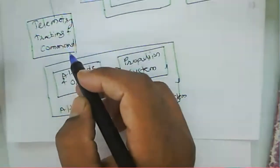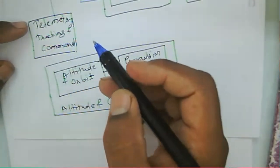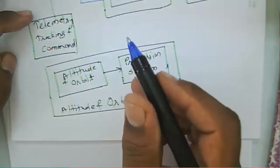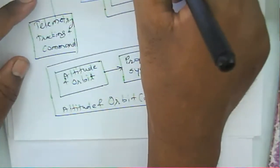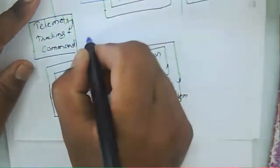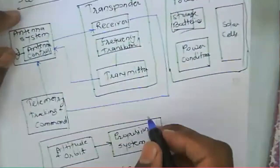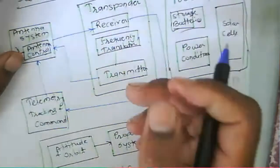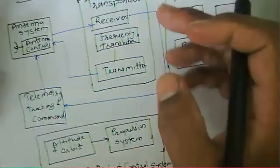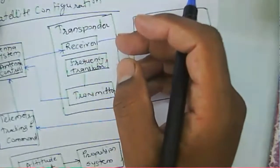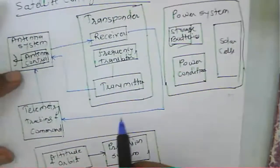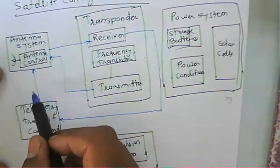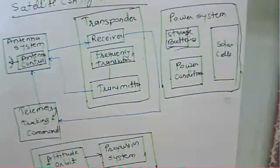The commands are received from the earth station, so whatever changes occur — or whatever problems exist in the transponder or components that are not working — that information is given to the earth station. The telemetry tracking and command system will communicate to the earth station regarding whatever problems exist in the given system.